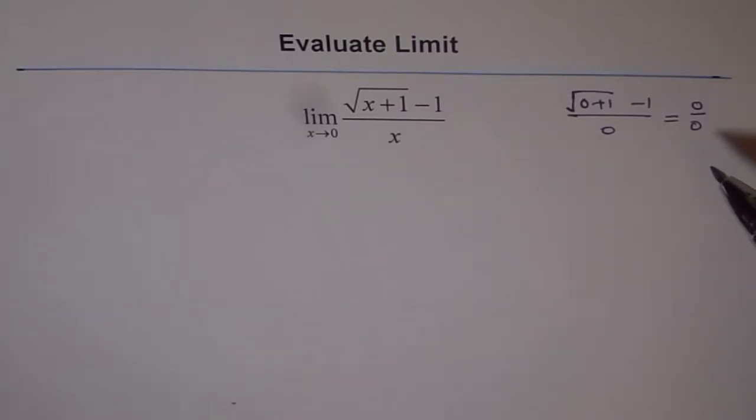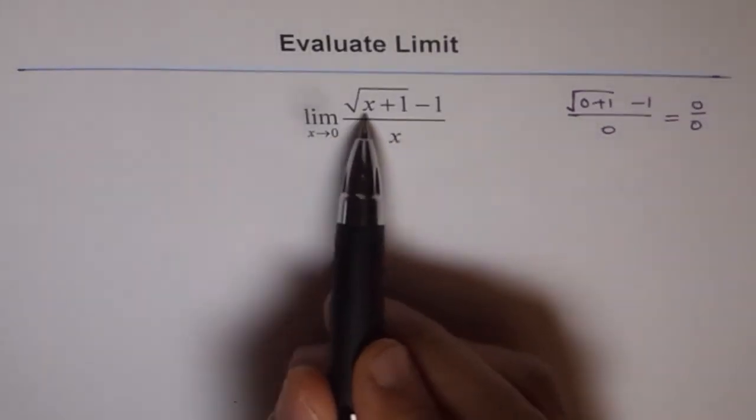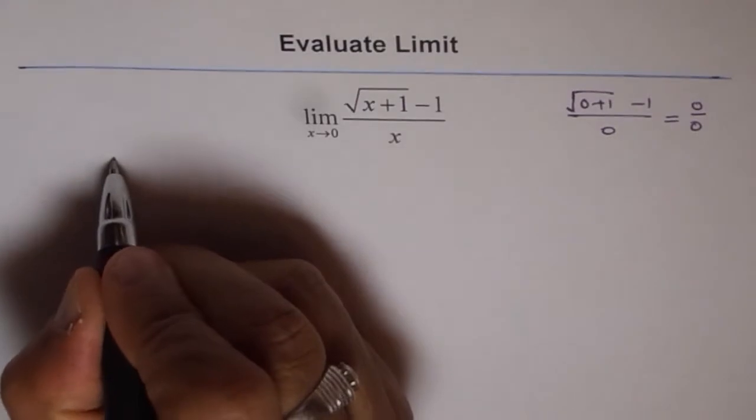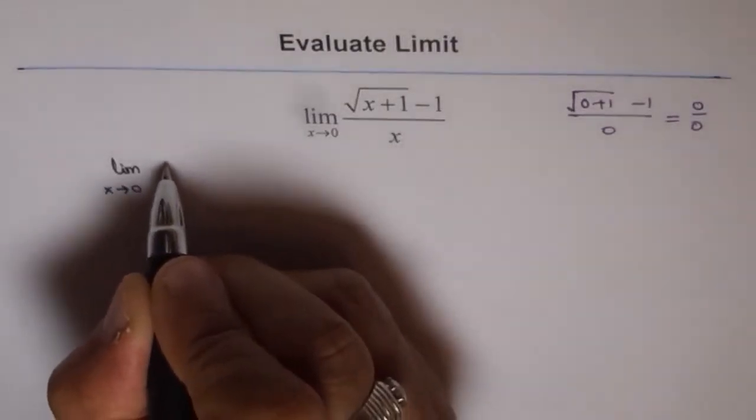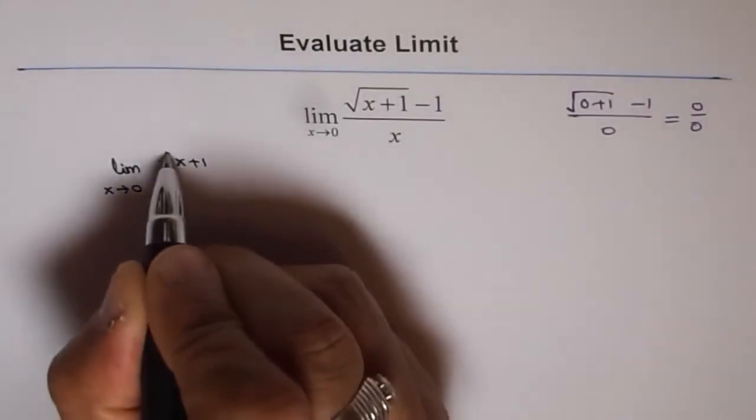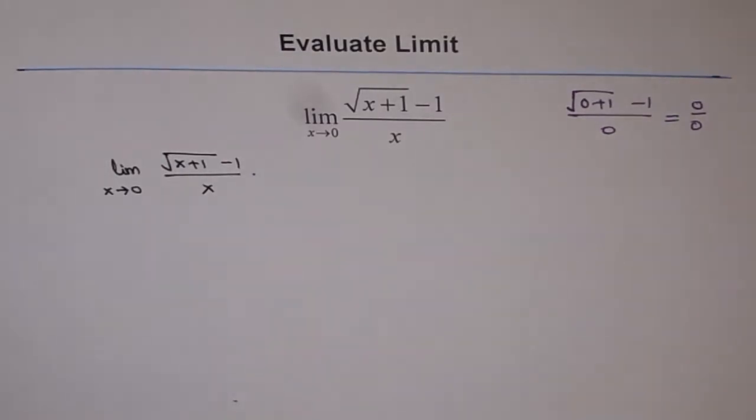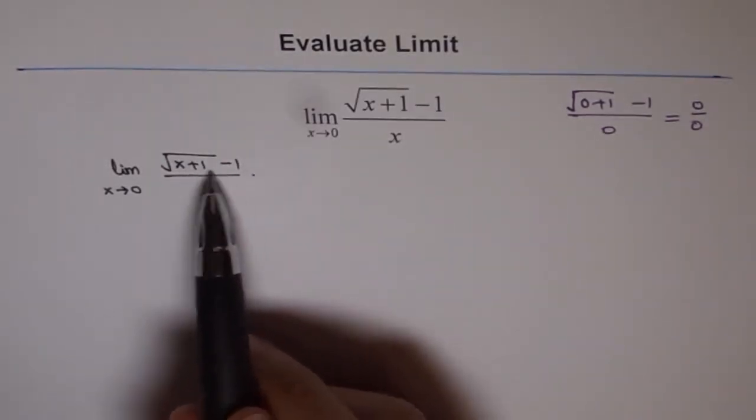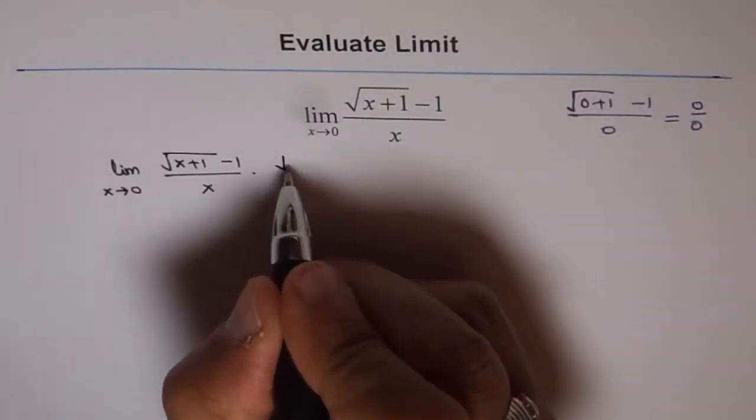How to simplify a square root function? The best way to simplify a square root function is to rationalize. We have square root of x plus 1 minus 1. We can write this as limit x approaches 0 of square root of x plus 1 minus 1 over x. Rationalization means multiplying by its conjugate. The conjugate means this minus becomes plus.